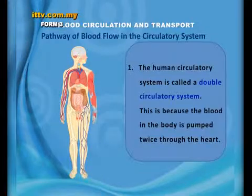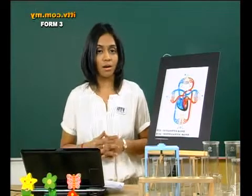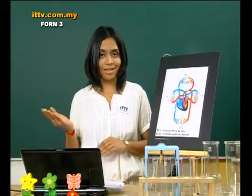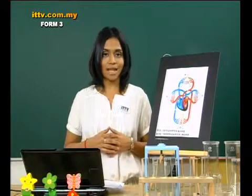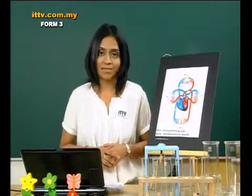The human circulatory system is called a double circulatory system. This is because the blood in the body is pumped twice through the heart. Blood collects from all our extremities to the heart, is then pumped by the heart to the lungs, from the lungs back again to the heart, and the second pumping takes place and the blood flows to our body. That's why they call it a double circulatory system.